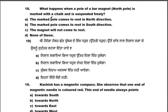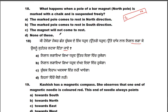What happens when a pole of a bar magnet is marked with chalk and is suspended freely? The marked pole comes to rest in the north direction. If you mark a pole with chalk and suspend it freely, it will always point north.